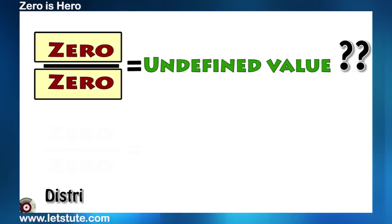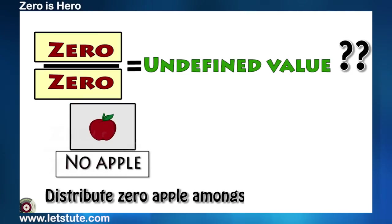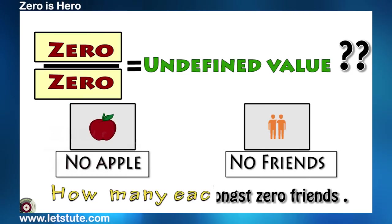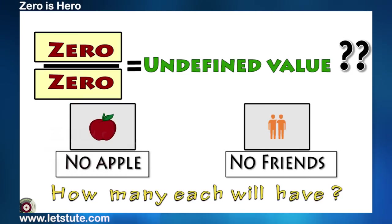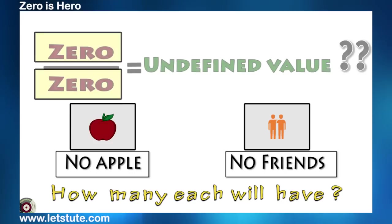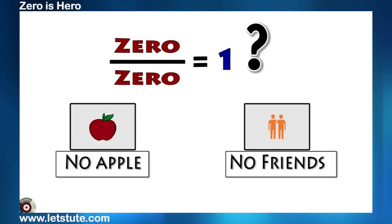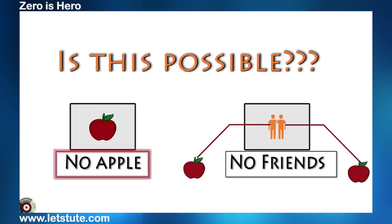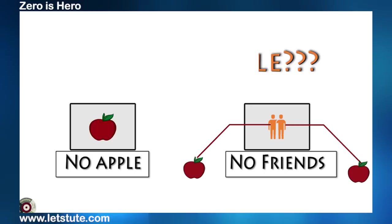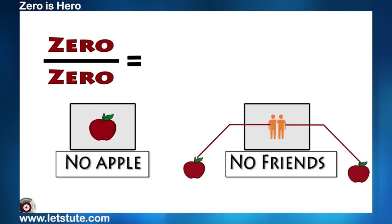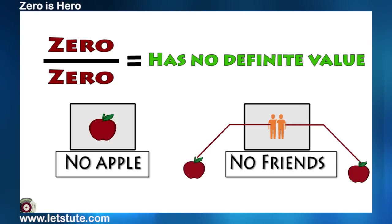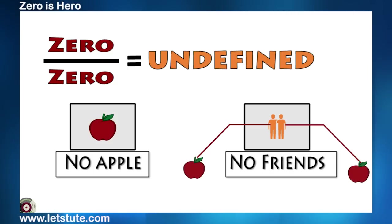For the first case, just assume that you distribute zero apples equally amongst your zero friends. So, how many each one will have? Do you see that this question makes no sense? Now, if 0 upon 0 is 1, then that would mean that each of your non-existent friend got one apple. How could that be possible? Because there is no apple. So, again, 0 upon 0 has no definite value and hence we say its value is undefined.